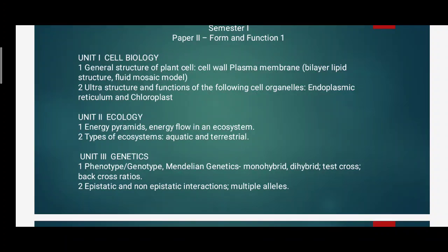These are the points covered in unit one for cell biology. Unit second is on ecology. In ecology there are two subtopics: first is the study of energy pyramids and energy flow in an ecosystem, and the second subunit is on types of ecosystems, in which aquatic and terrestrial ecosystems are included.